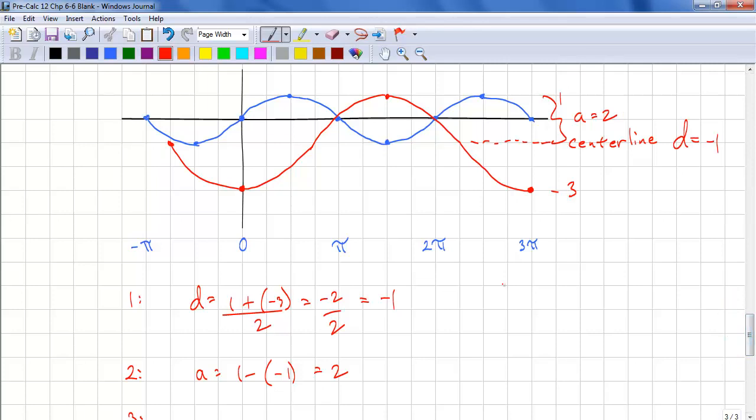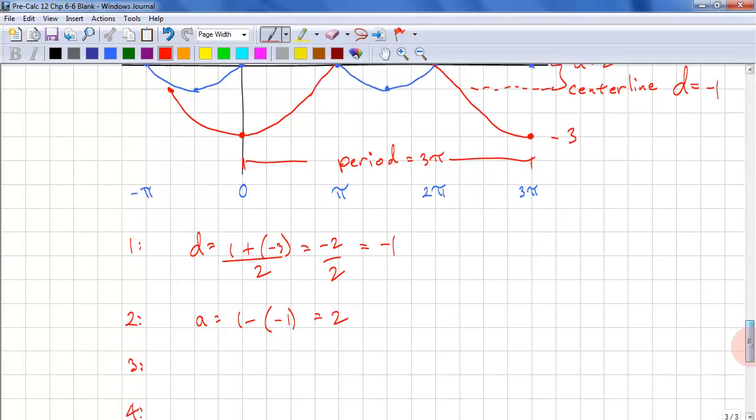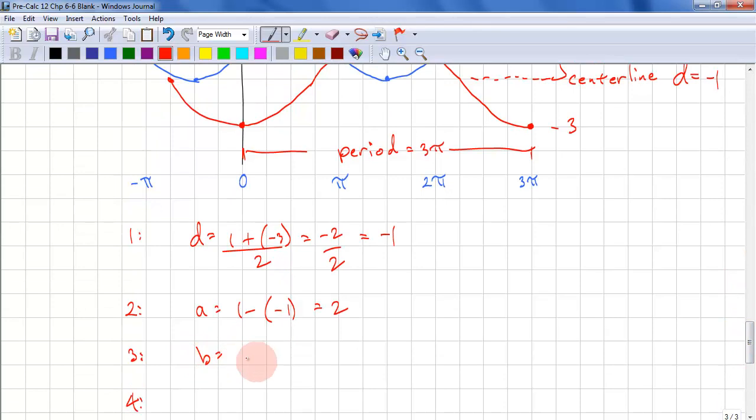Now we need to calculate the period in order to be able to calculate b. And let's use that point and this point. Period equals 3 pi. So b equals 2 pi over 3 pi, and that's 2 thirds.